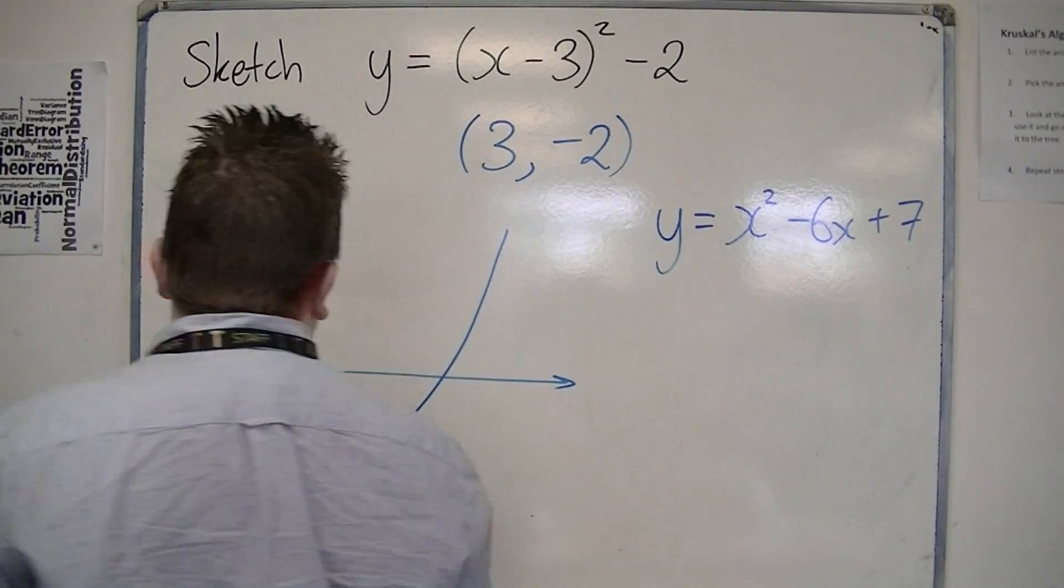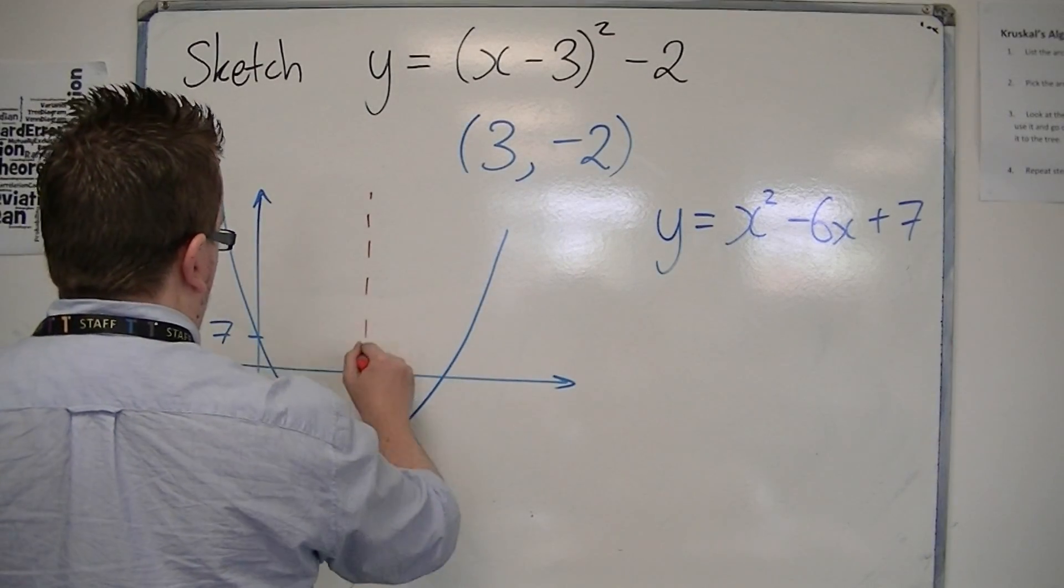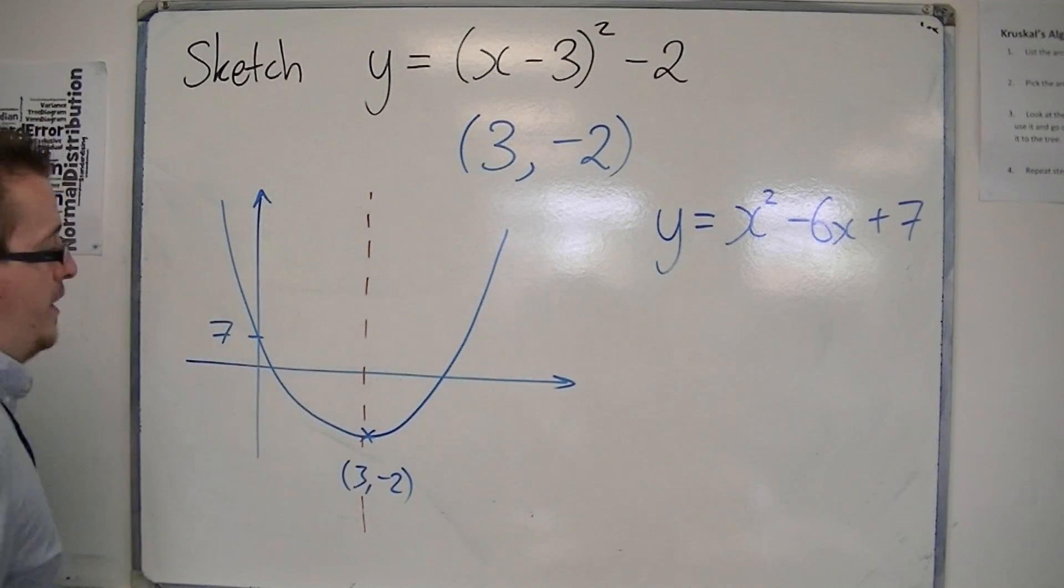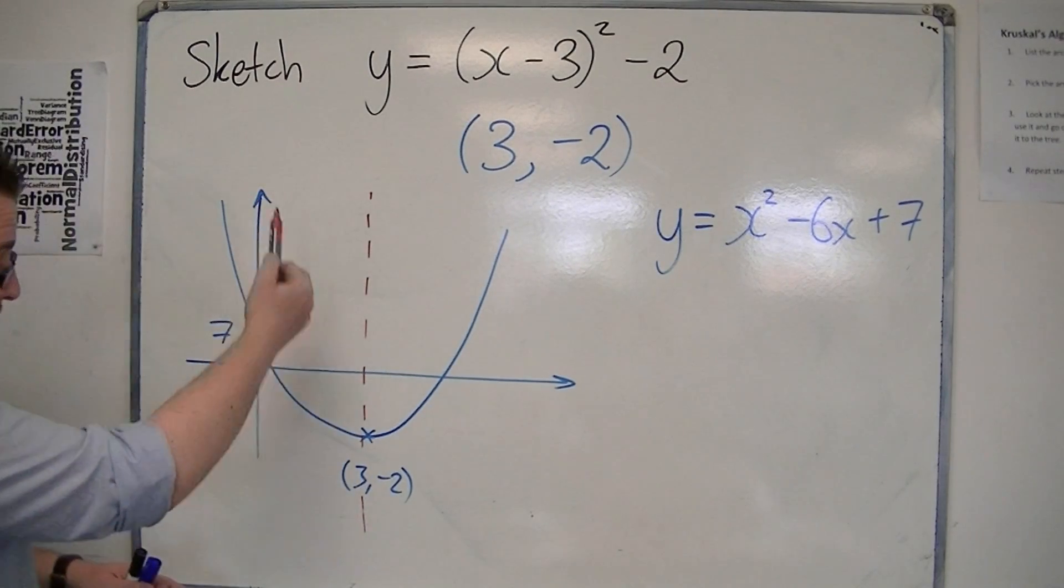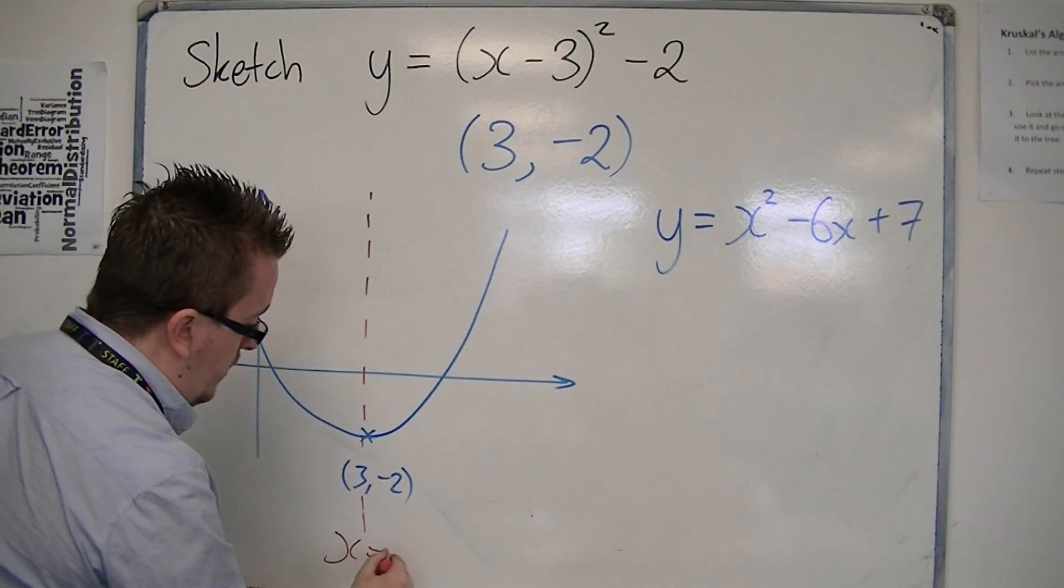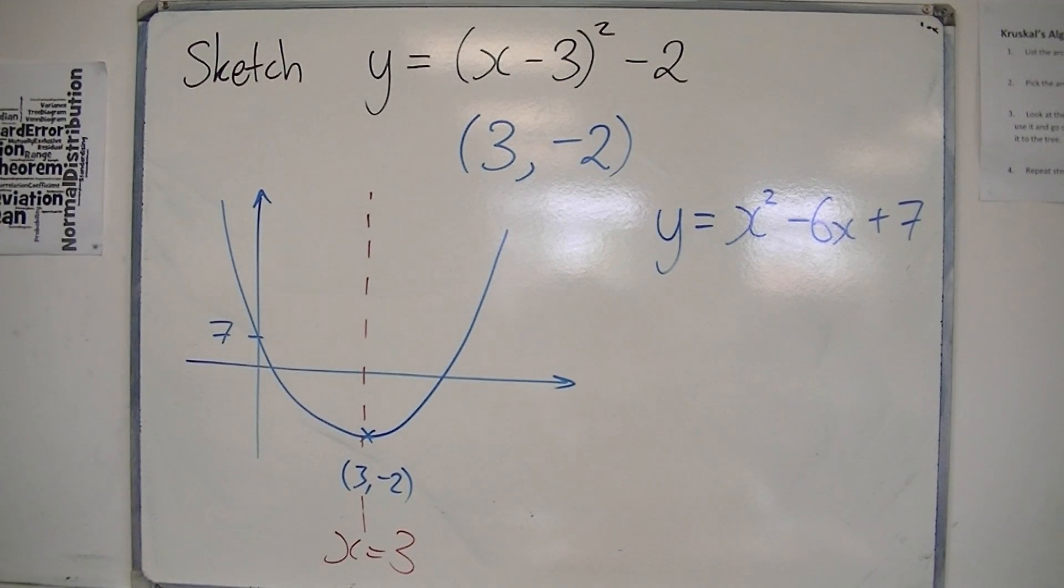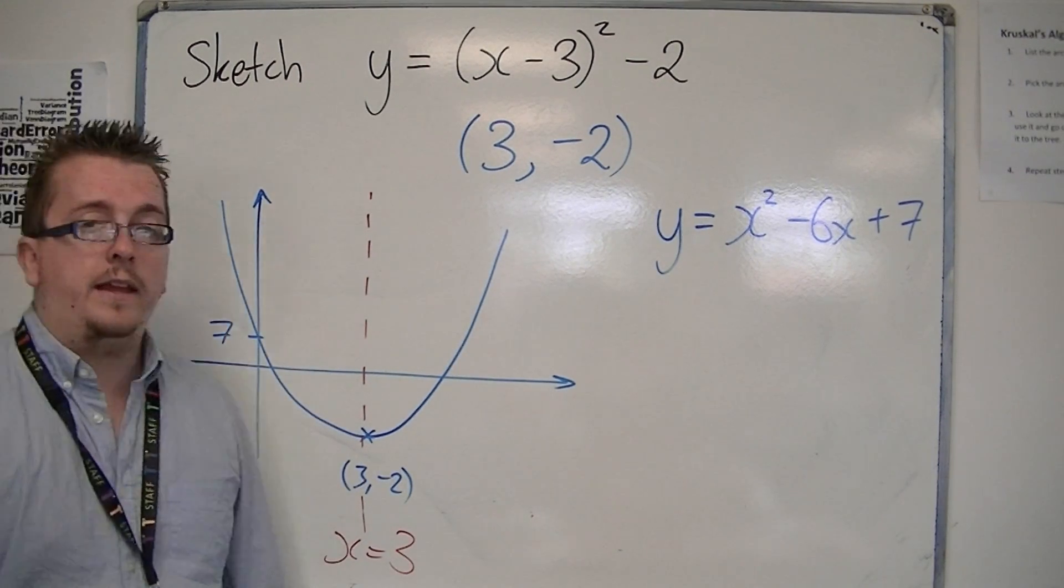It needs to have its line of symmetry as best you can. So the line of symmetry has an equation of x equals 3, and it needs to cross the y-axis, you need to label it correctly. That is an effective sketch of this curve.